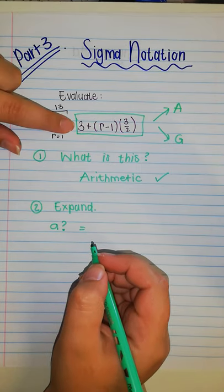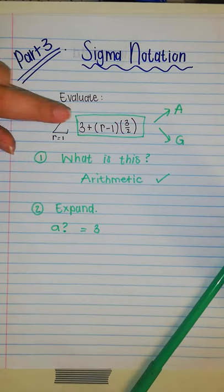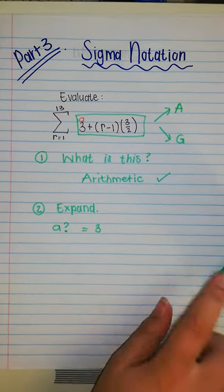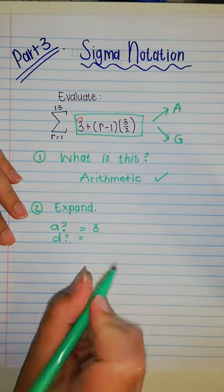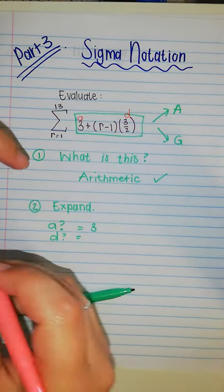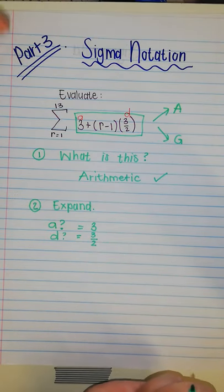My A is, if I look at the formula, it's going to be three, because in my formula, this is A. Okay, and then I need my difference as well. So, what's my difference? If we look at my formula here. Okay, so that would be three over two, would be my difference.